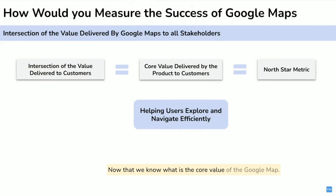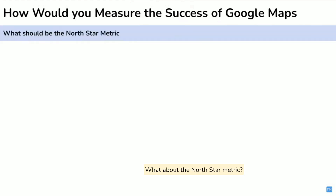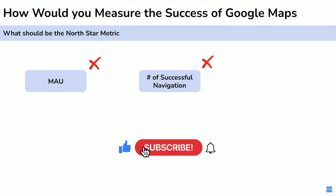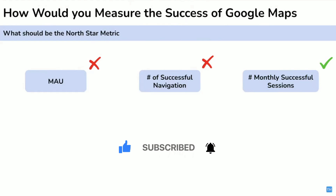Now that we know the core value, what is the North Star metric? Monthly active users (MAU) should not be the North Star because it doesn't tell you the depth of activity on Google Maps — it's a good metric, but not the North Star. Number of successful navigations is also good but too narrow, focusing only on navigation. How about number of successful sessions per month? Here, a successful session means either a navigation success or an exploration success.